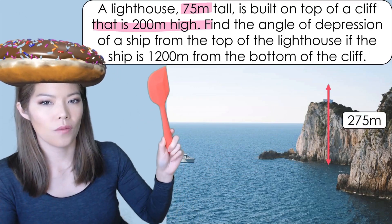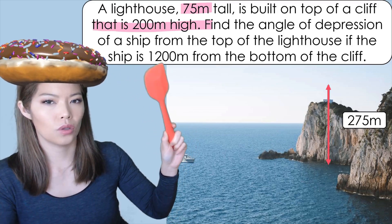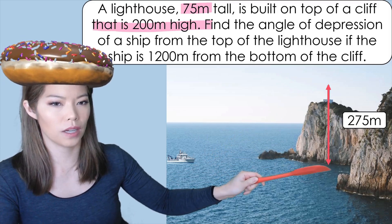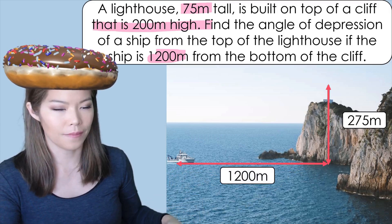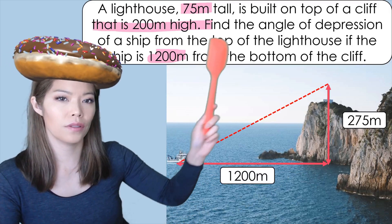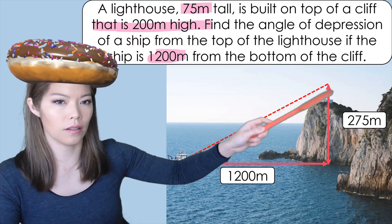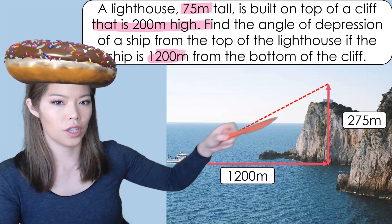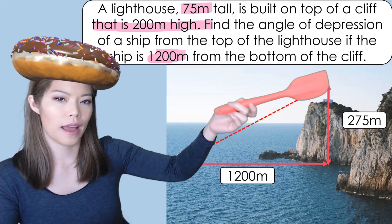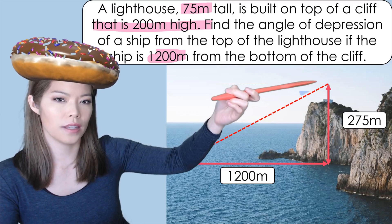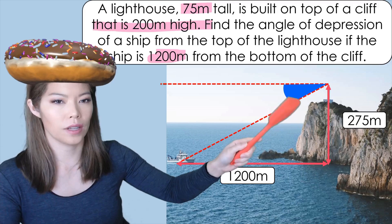We have another number there, 1200, and it says ship is 1200 from the bottom of the cliff. So 1200 would be this line here. Now the question is asking for the angle of depression of a ship from the lighthouse. So the lighthouse here. So we're looking at the ship. So it's this line but it wants the angle of depression.